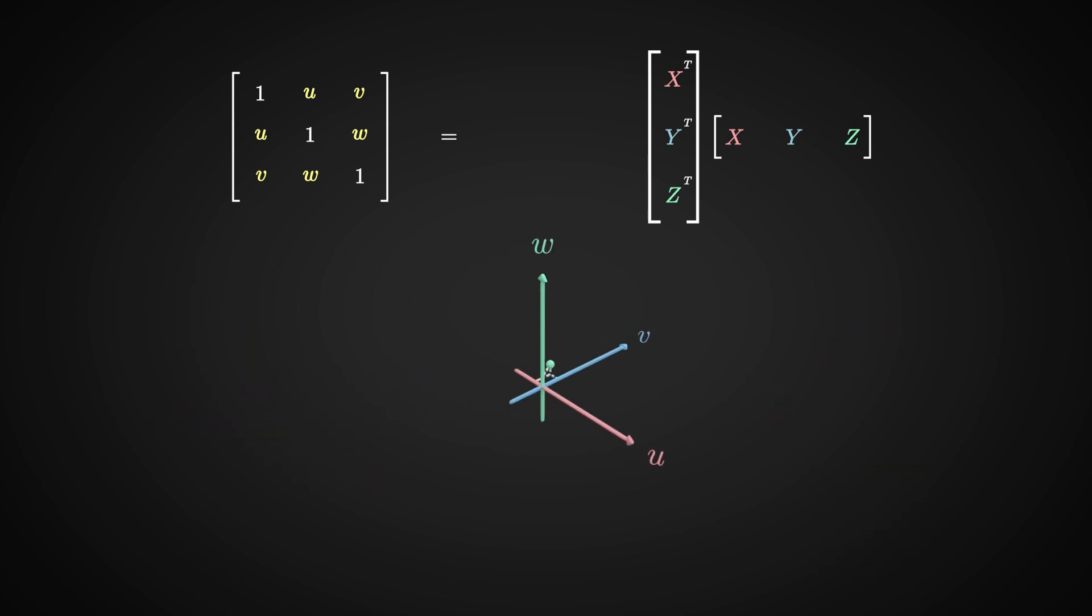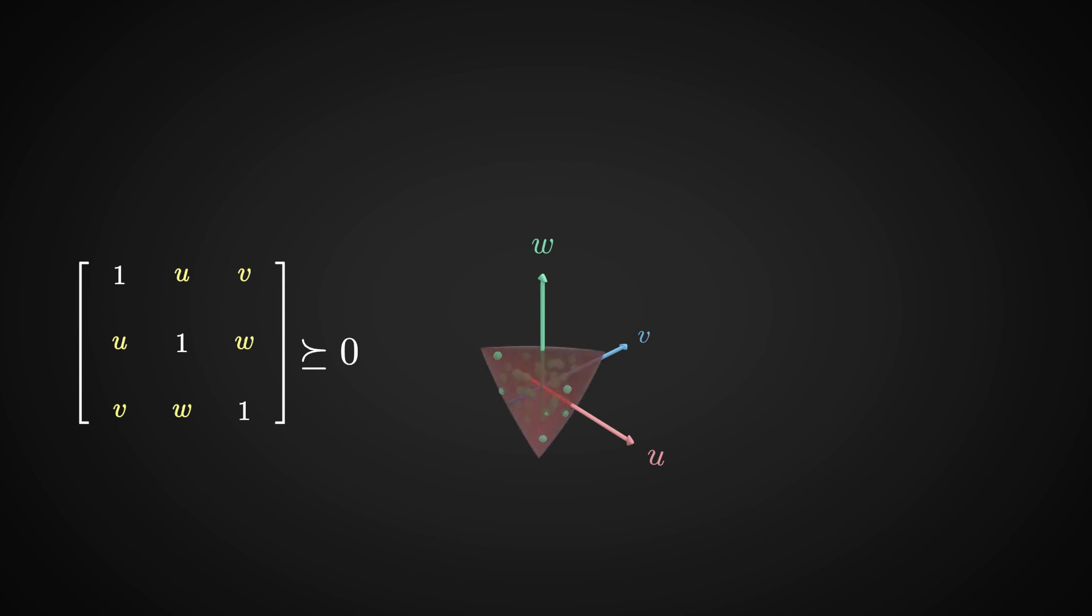So from now on, instead of talking about vectors x, y, and z, we can simply talk about triplets u, v, and w that make this matrix positive semi-definite. And we know exactly what the set of those points looks like. We even gave it a name, the elliptope.